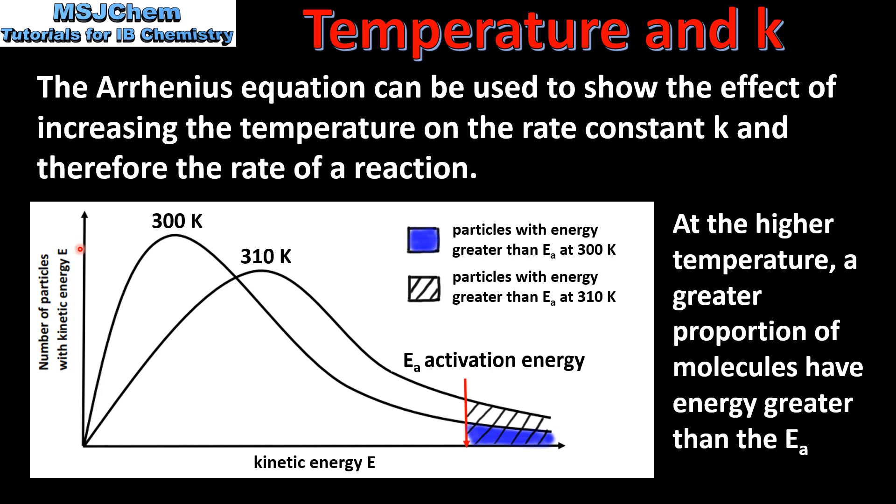Here we have a Maxwell-Boltzmann distribution curve for two gases at 300 K and 310 K. The area in blue represents the number of particles with energy greater than activation energy at 300 K.